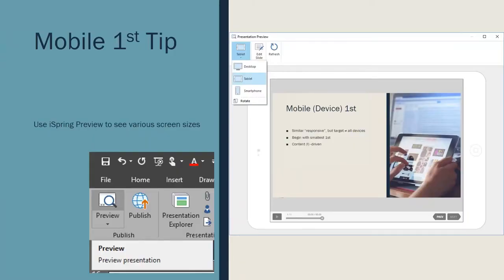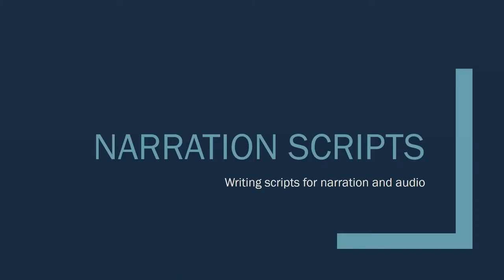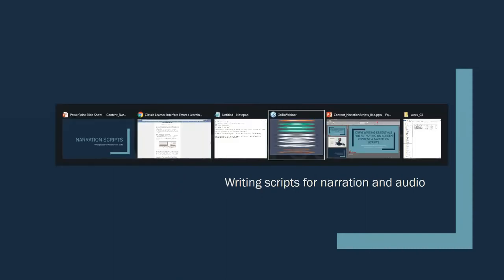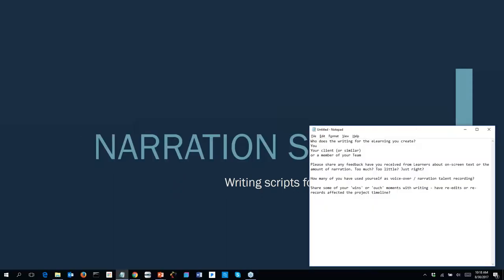A great way to check your content is using iSpring's preview — in the presentation preview as you're publishing, or the preview button up top. You can see how your content looks on various devices including desktop, tablet, and smartphone. Use this early in your development process when you begin creating content and want to see how the text looks as you go forward.